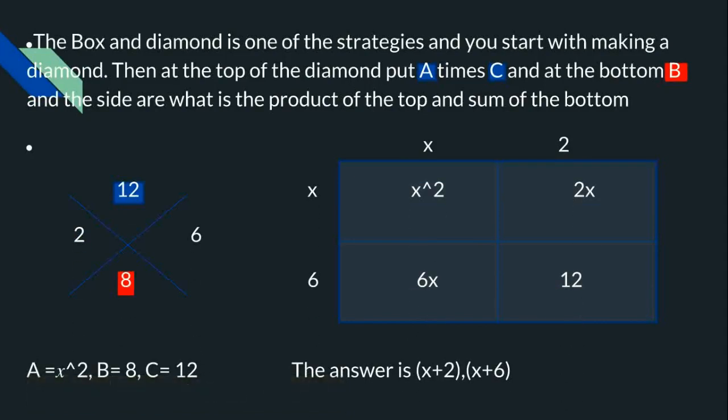In this problem I use the diamond and box strategy. At the top of the diamond you times a by c. The equation given is x² + 8x + 12, so x squared, and our b is 8 and our c is 12. So 12 times 1 is 12, and at the bottom you put your b just by itself.